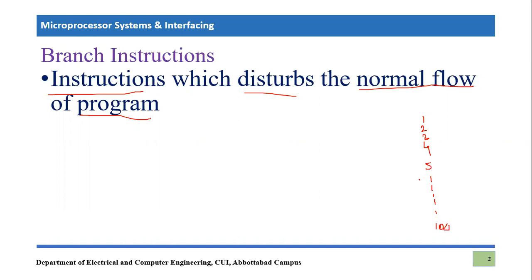The program will be executing instruction by instruction. Instruction one will execute, then we proceed to instruction two. We also discovered in the last lecture that there is an important register called the program counter. The program counter keeps track of the program and guides its flow. It points to instruction two while instruction one is executing. When instruction one finishes, instruction two begins, and the program counter increments for instruction three. This process continues until the processor arrives at instruction 100 — this is the normal sequential flow of the program.